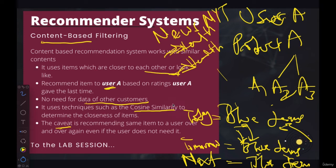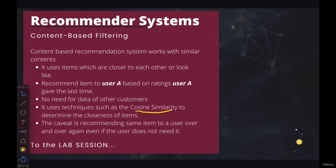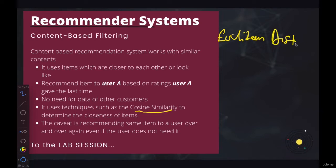Let me explain cosine similarity. Cosine similarity is a distance measure. In our previous machine learning class, we talked about various distance measures and mentioned cosine similarity. One of the distance measures we talked about was Euclidean distance.